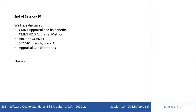That is the end of session number 10, where we have discussed different CMMI appraisal methods and their benefits, the current version 2.0, the two guiding documents ARC and SCAMPI, the Class A, B and C appraisal considerations, and the different considerations required for appraisal planning. Thank you.